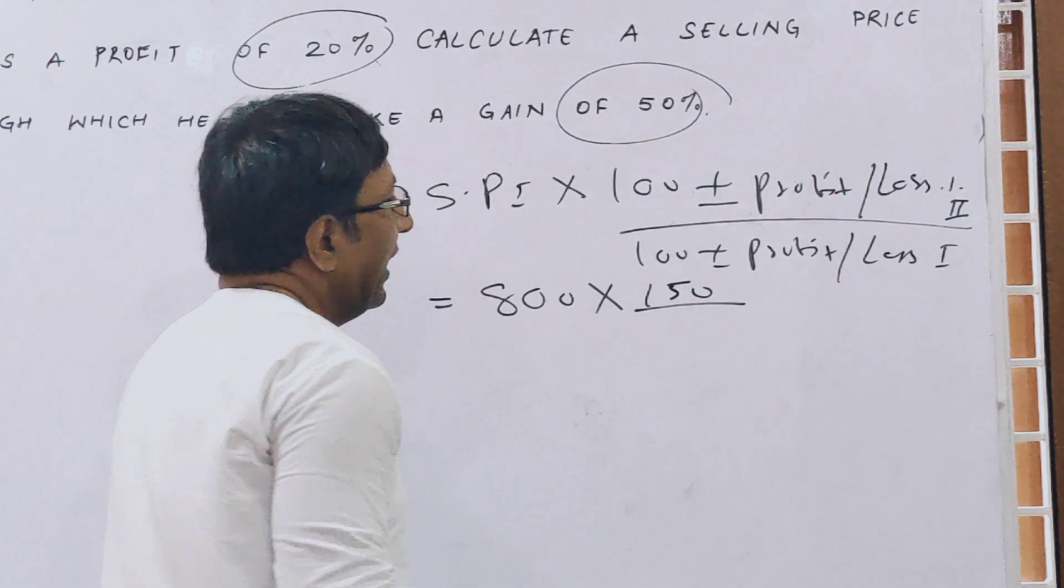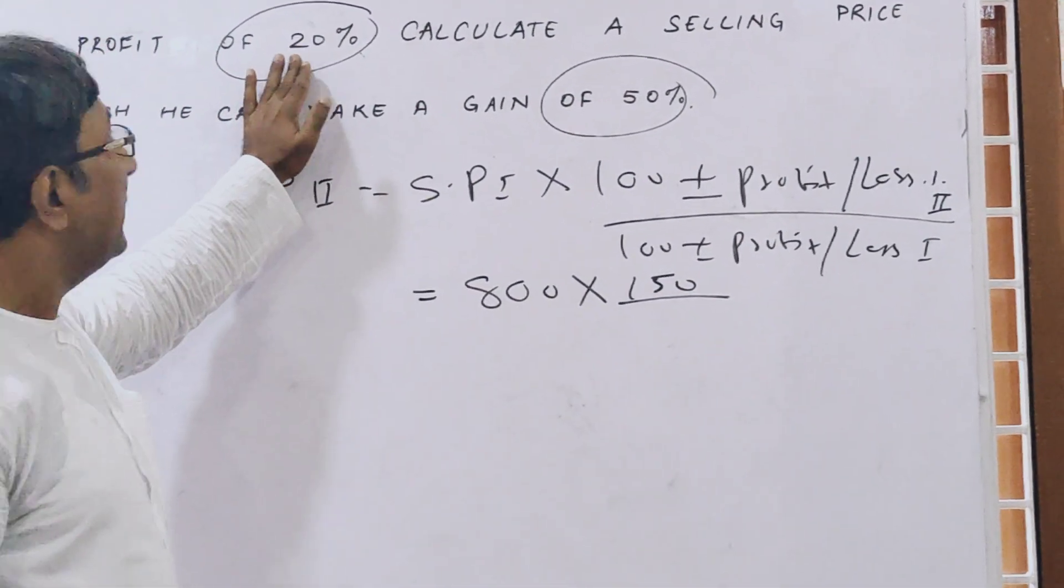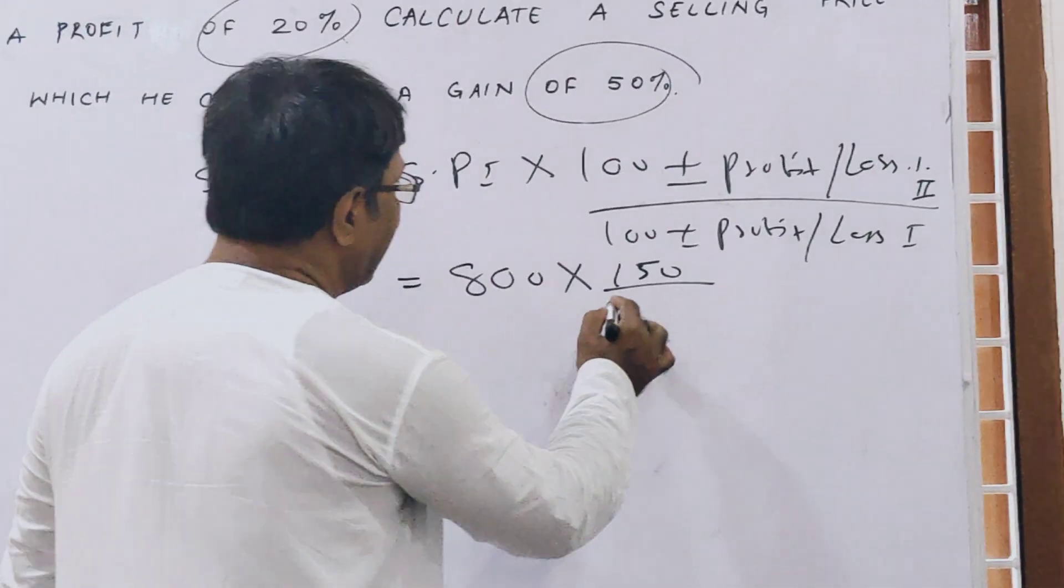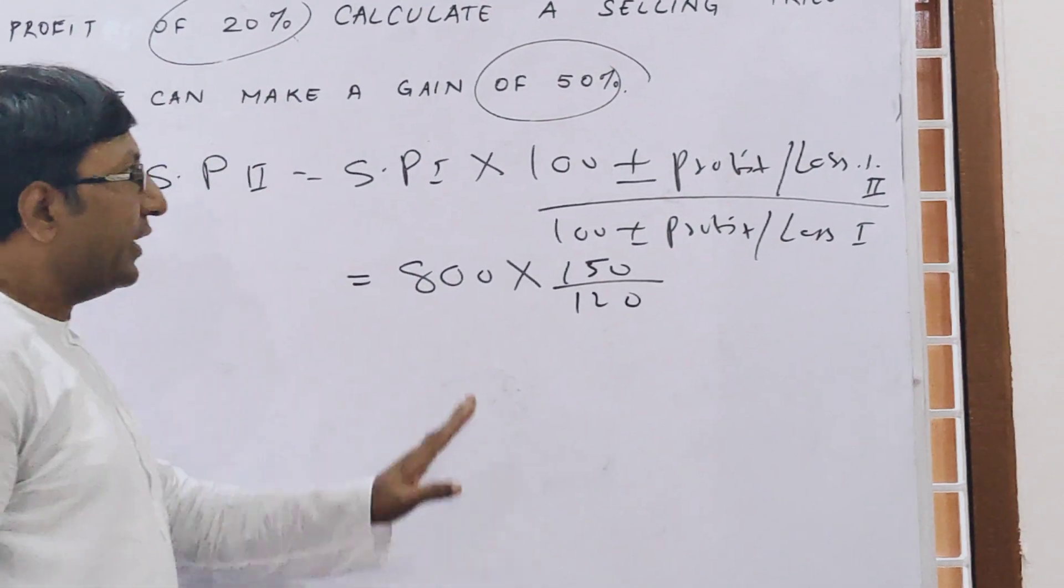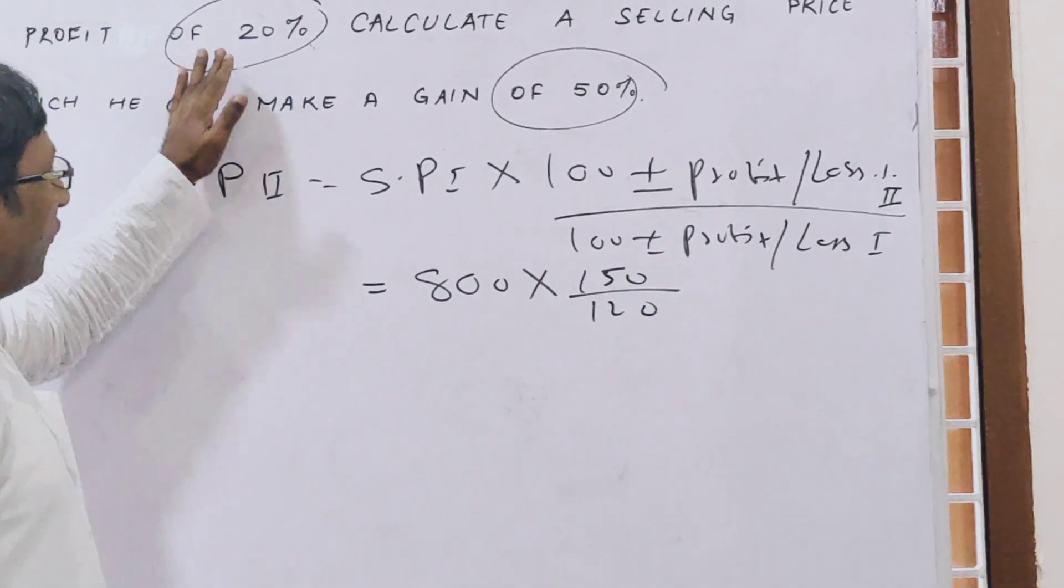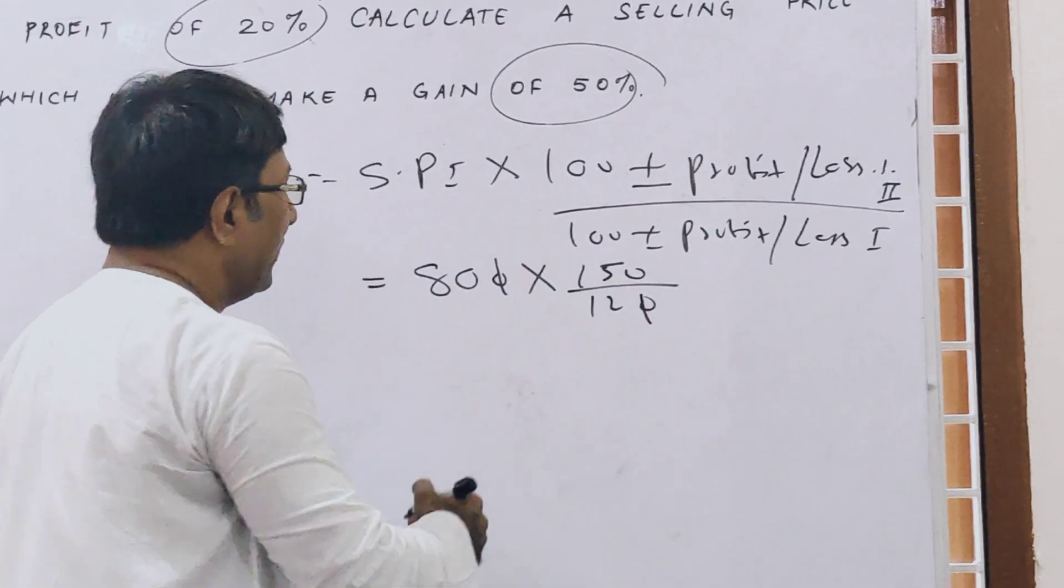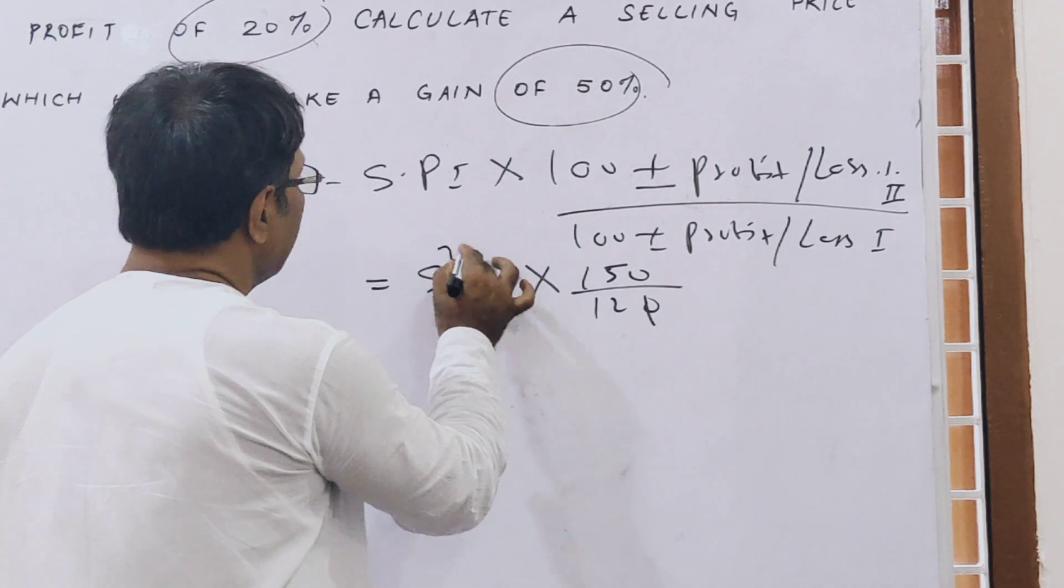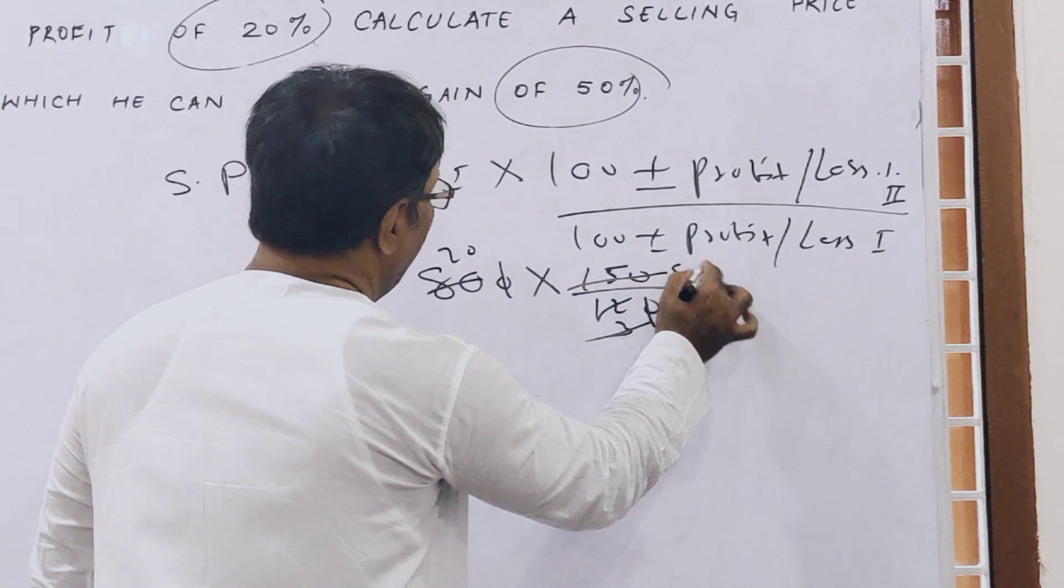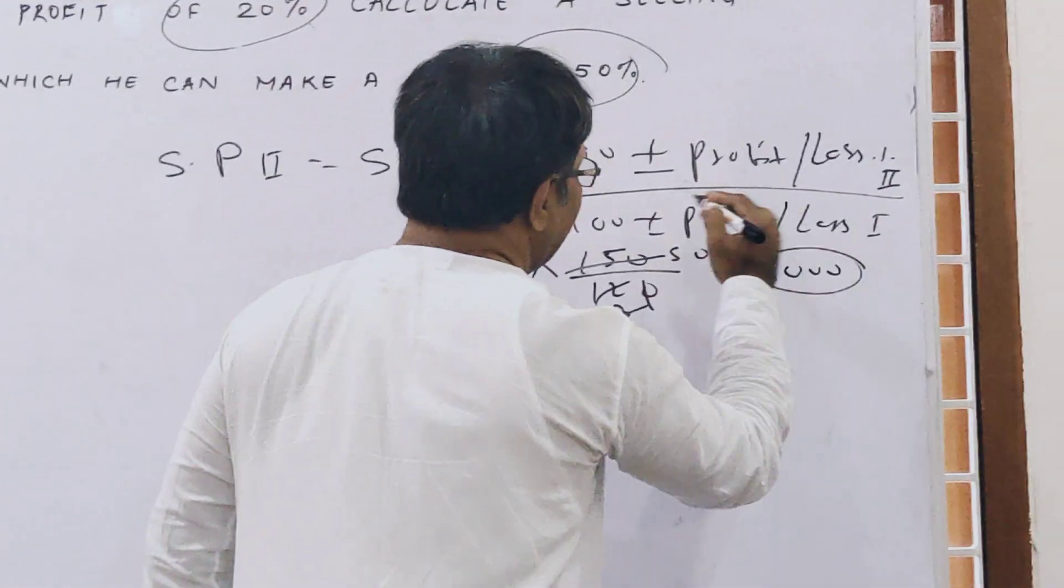And here 100 plus profit or loss first. In the first case they are getting 20% profit, so here 20% profit that is 120. So 800 times 150 upon 120. Now solve this. This zero cancels, 4 into 8 and 4 into 3 is 12, this is 3 into 50, so 5 into 10.